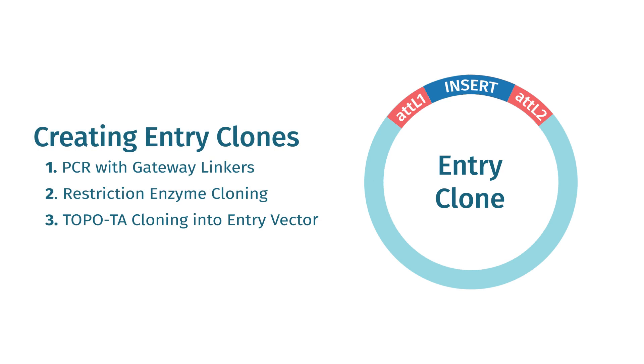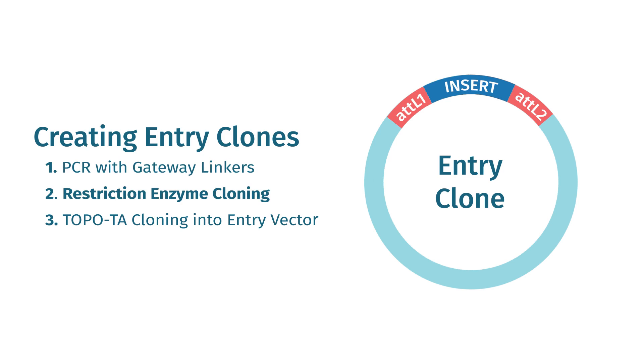There are three methods for creating entry clones: via PCR with gateway linkers, standard restriction enzyme cloning, or TOPO TA cloning.